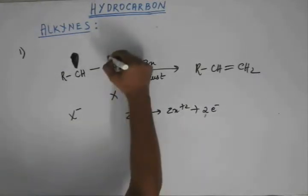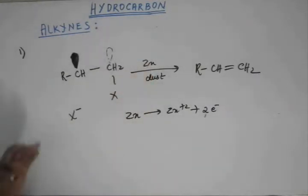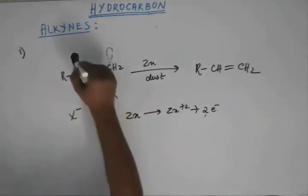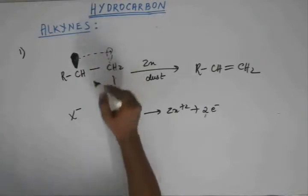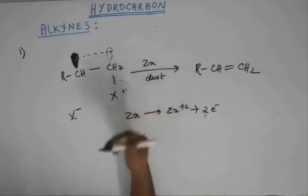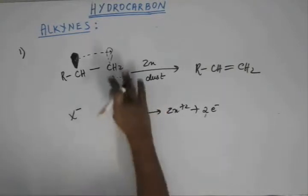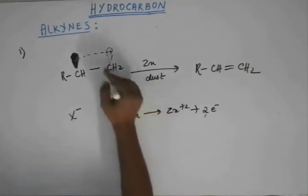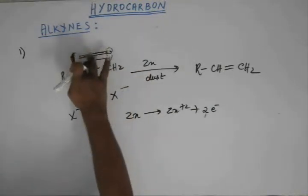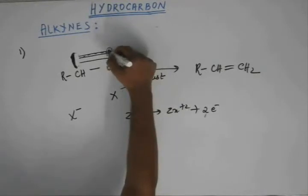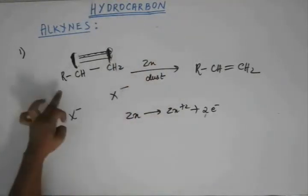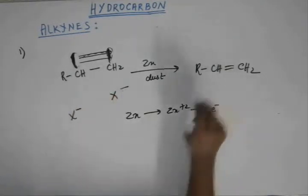It happens simultaneously, but for the sake of understanding: suppose this halogen comes out and the antibonding has two electrons. Then these two electrons start going into the antibonding orbital of the adjacent carbon, and that carbon loses electrons from its bonding orbital, expelling the other halogen as X⁻. A bond forms between the two carbons — sideways overlapping gives a pi bond — and you get an alkene.